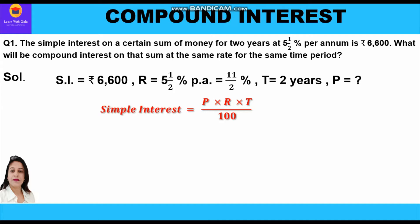Putting in the values: 6600 = P × (11/2) × 2 / 100, which gives us P × 11 × 2 / (2 × 100).